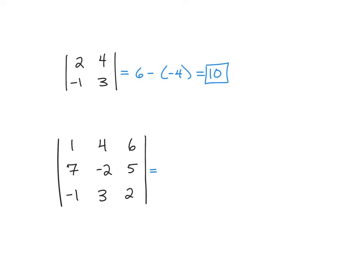We're going to take the first element of the first row, 1, and multiply it by the second order determinant that would be left if you take out the row and column that 1 is in. So if you take that out, you'd be left with negative 2, 5, 3, 2.